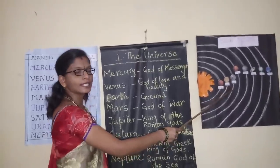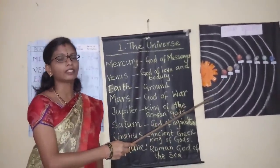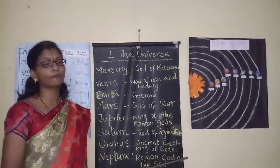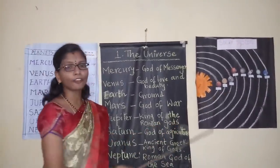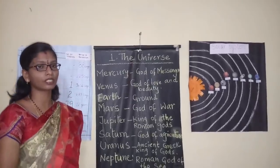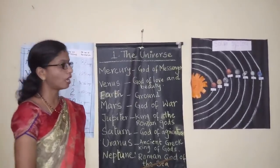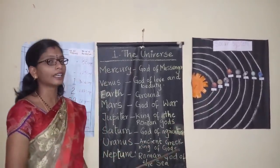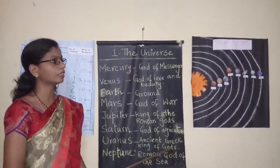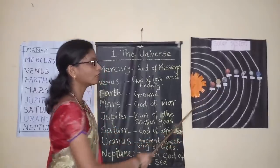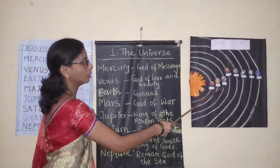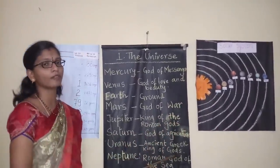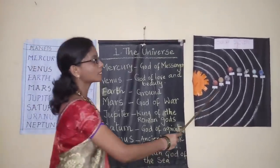The third planet in the solar system is the earth. The earth is the only planet that supports life. We live on the planet earth. The earth made life possible because of the air, water, land and sunlight on it. The earth is surrounded by a layer of air known as atmosphere. The earth takes 365 and one-fourth days to complete one revolution around the sun.